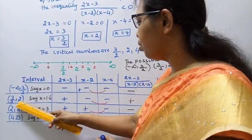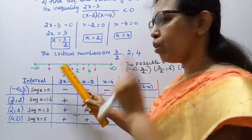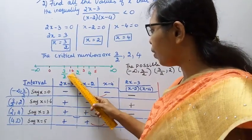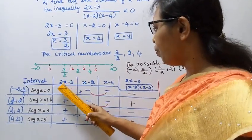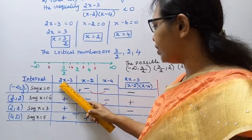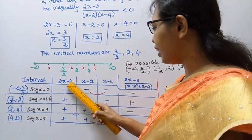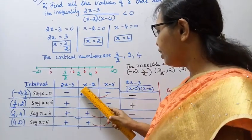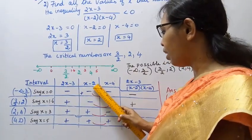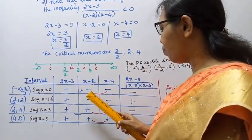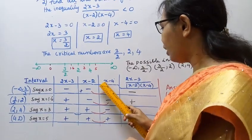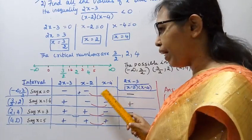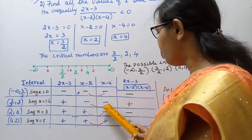For the interval 3/2 to 2, take x = 1.6. Then 2(1.6)-3 = 3.2-3 = +0.2, sign is plus. 1.6-2 = -0.4, sign is minus. 1.6-4 = -2.4, sign is minus.